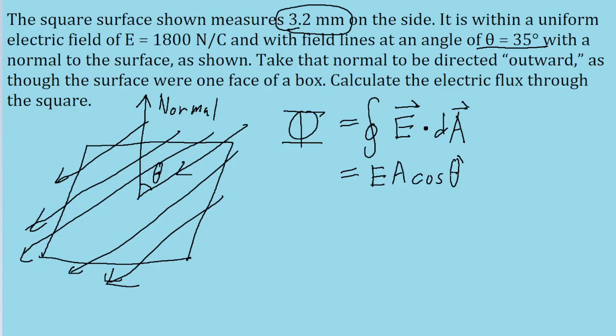But the theta we use in the cosine might be confusing because, with the way flux is defined, the angle should be between the head of the normal vector and the heads of the electric field vector lines.